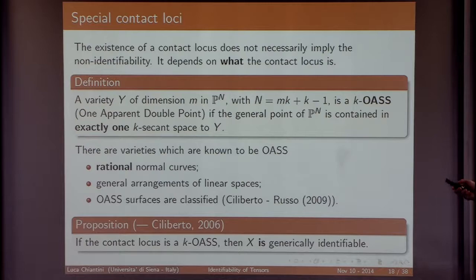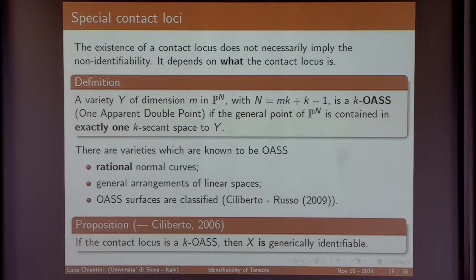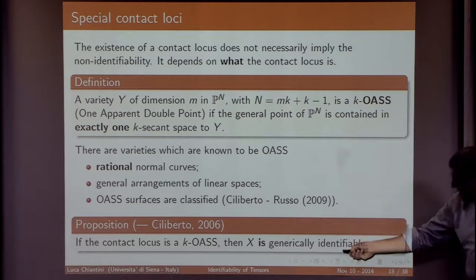Conversely, if the contact locus is an OADP variety, then all decompositions come from the contact locus. If the contact locus has more than one decomposition — as in the case of elliptic curves — then generic identifiability fails. But if the contact locus is OADP, then X is k-generically identifiable.